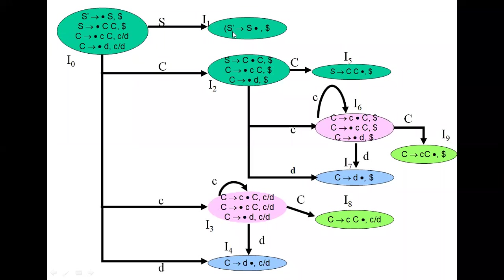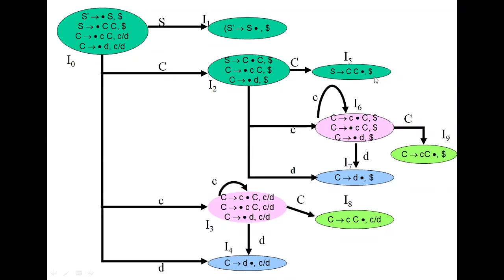So we have I1, I2, I3, I4 from I0. For I1, the dot has been placed at the end, so nothing to do. But for I2, S produces C dot C. So we apply goto on capital C, goto on small c, and goto on D. The dot shifts one more position. With goto on capital C, the dot moves to the end. Goto on small c gives I6. And for small d, we get C produces small d dot. In this way we get all item sets from I0 to I9 for LR1.